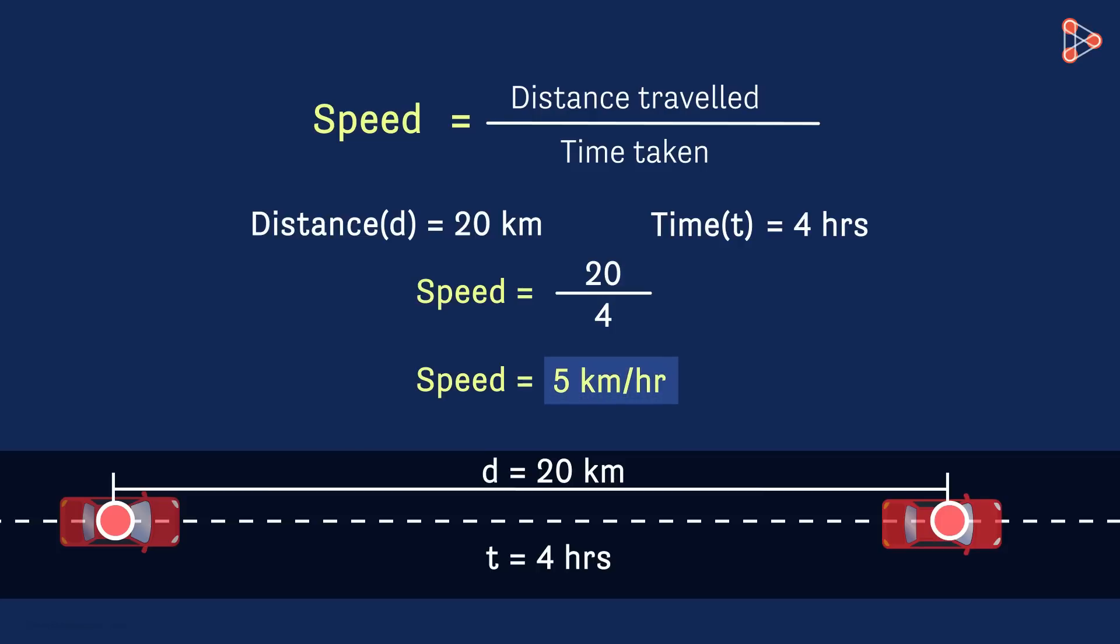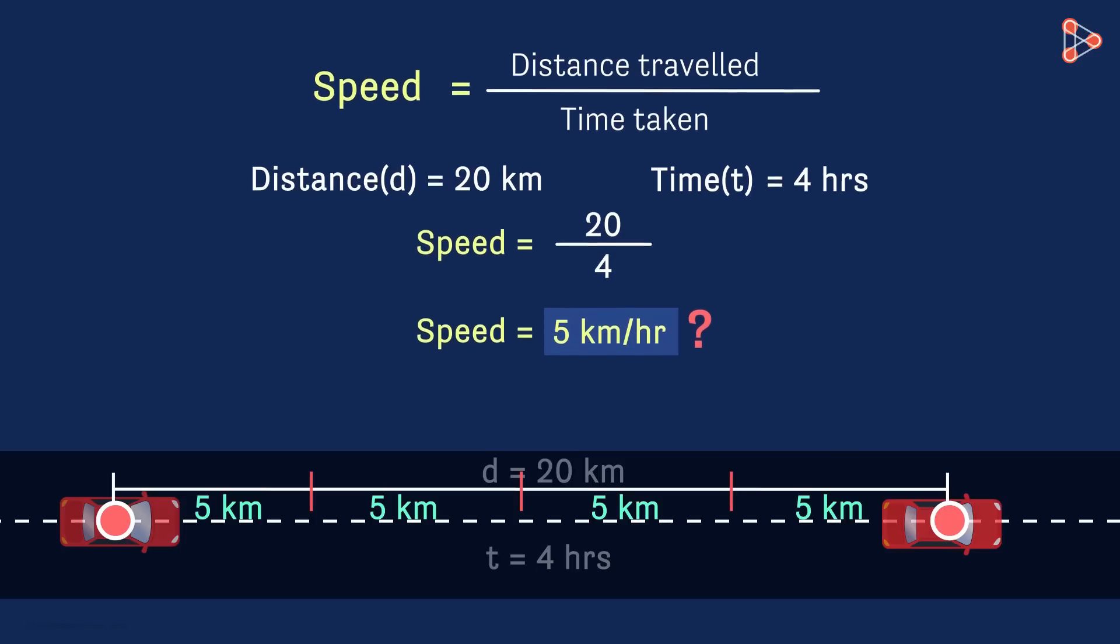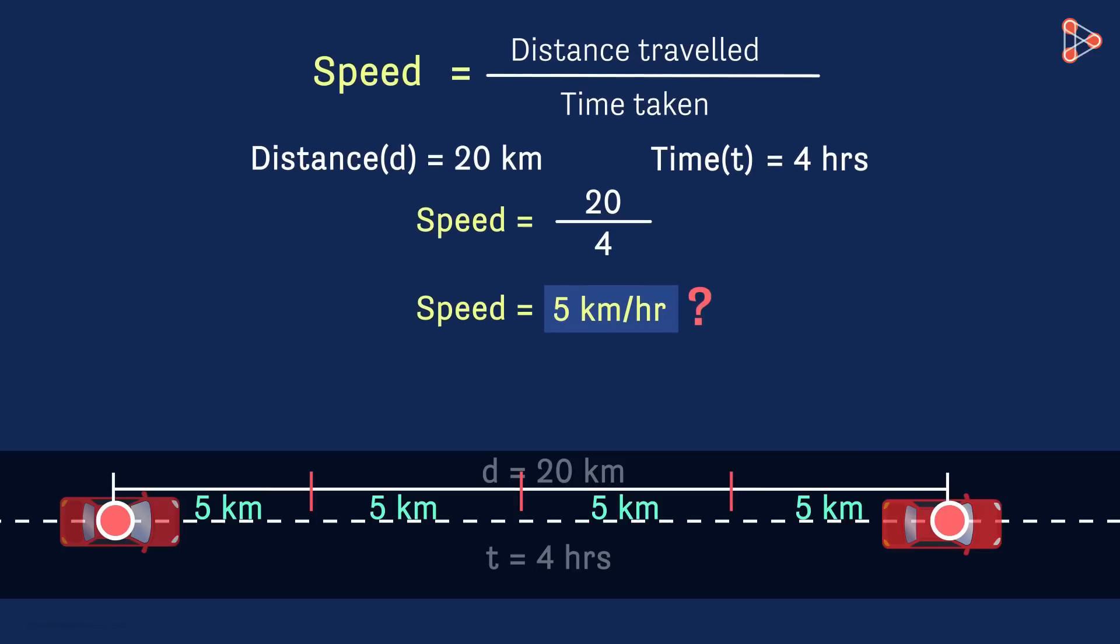Look at the value carefully. What does it tell us? Does it mean that our object travelled 5 kilometers in every hour? Or in other words, does the value of speed say that the object travelled at a constant speed?